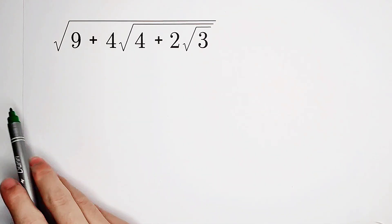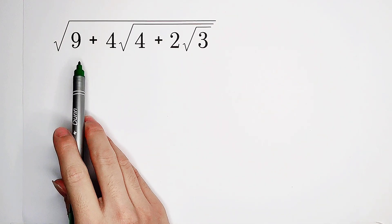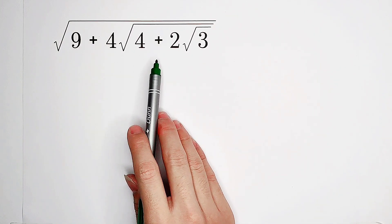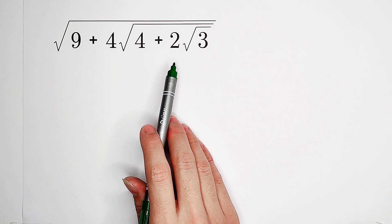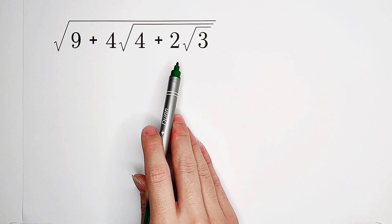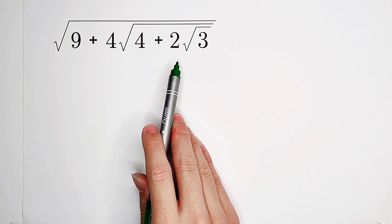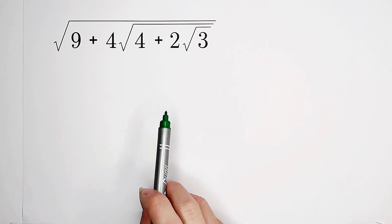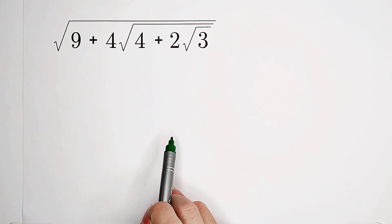Simplify: square root of 9 plus 4 times square root of 4 plus 2 times square root of 3. How shall we solve this problem? Three square roots.